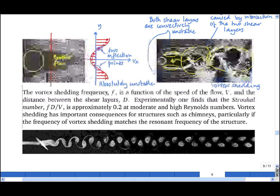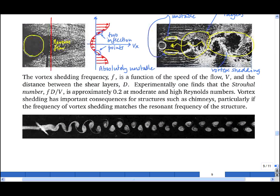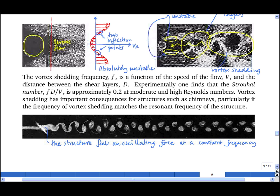And this vortex shedding at a fixed frequency and a set large amplitude has very important consequences for structures. For example, consider the structure here that is being subjected to the forces from vortex shedding at a regular frequency. And imagine what happens if that forcing frequency matches a structural resonant frequency.